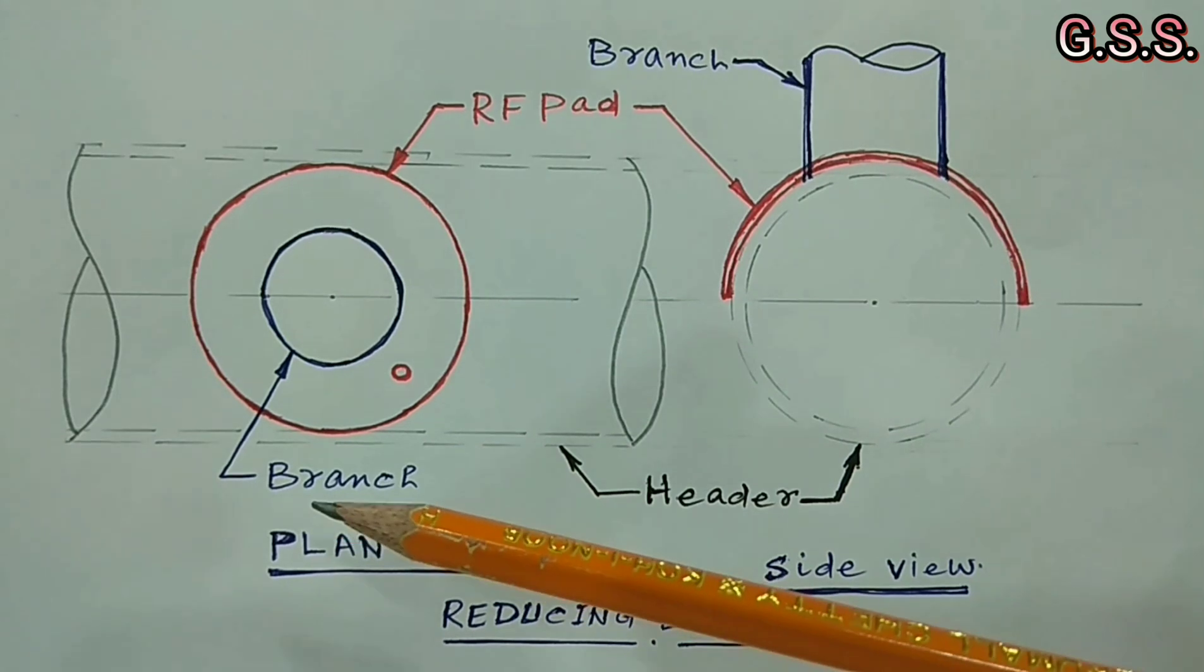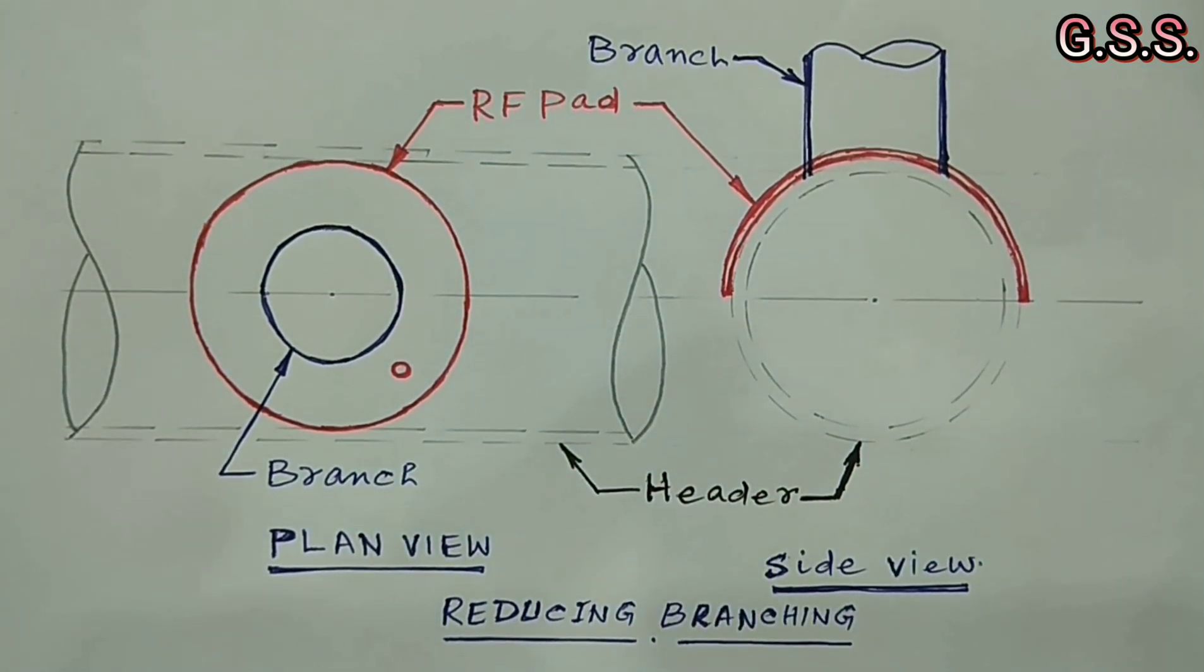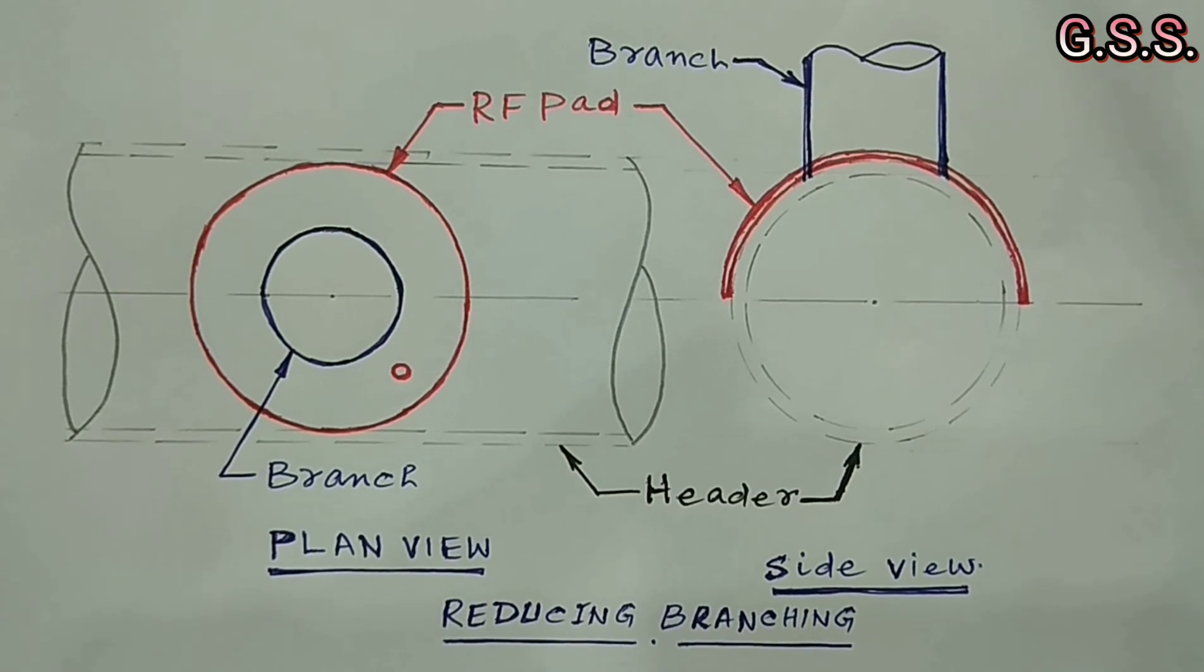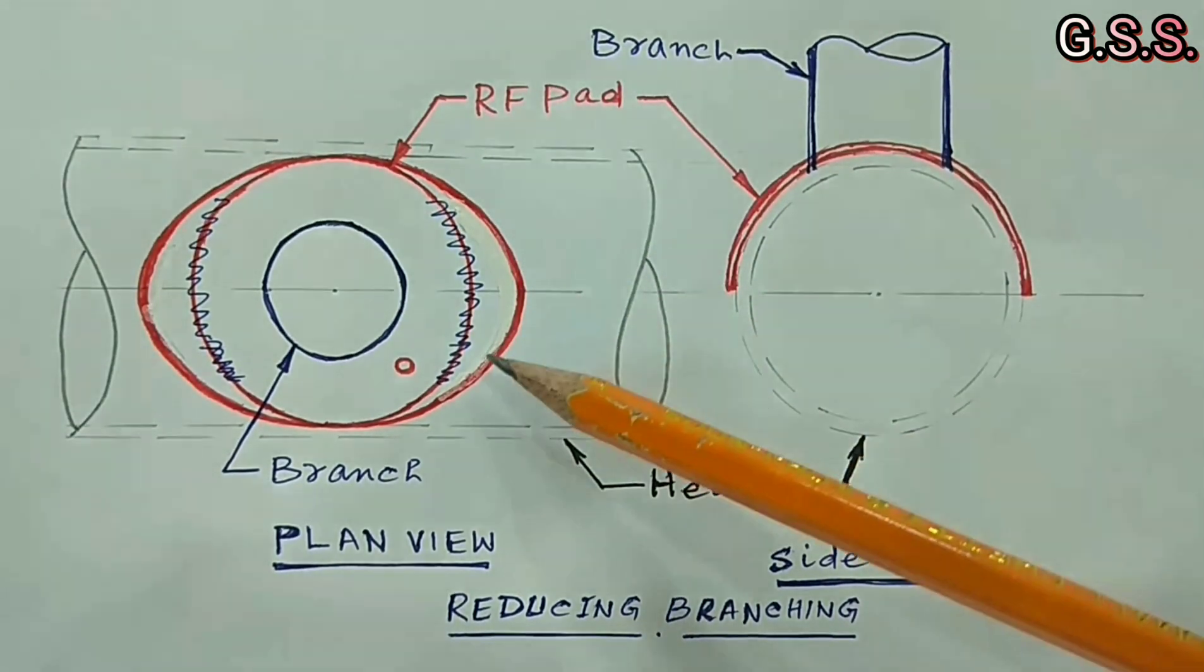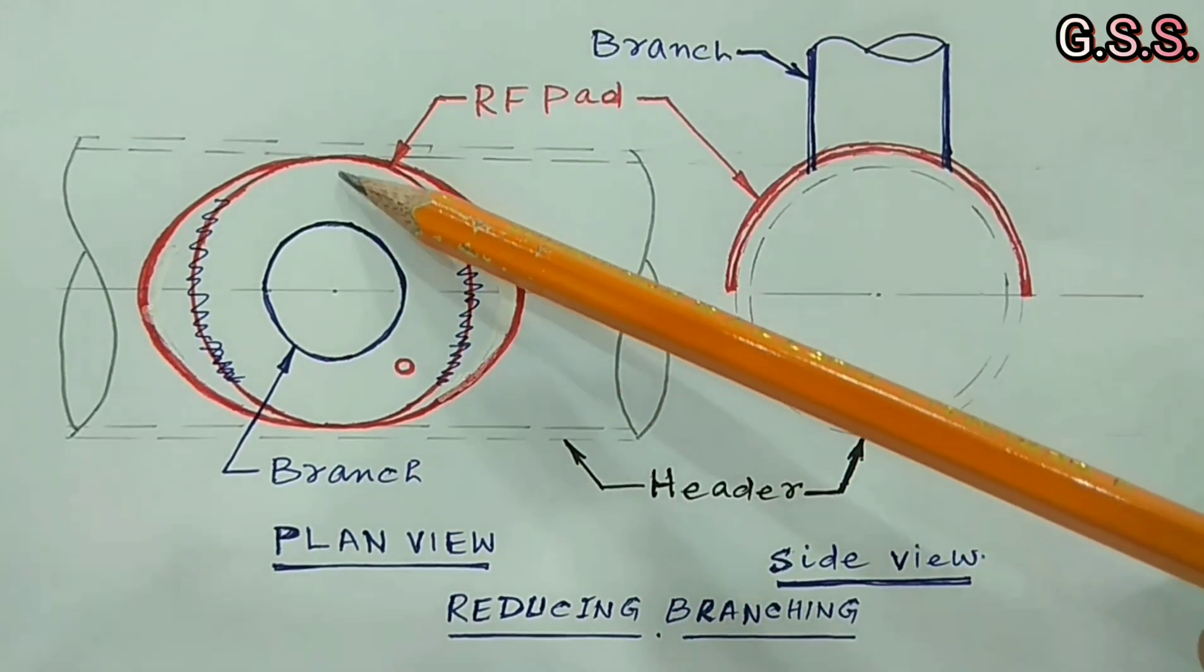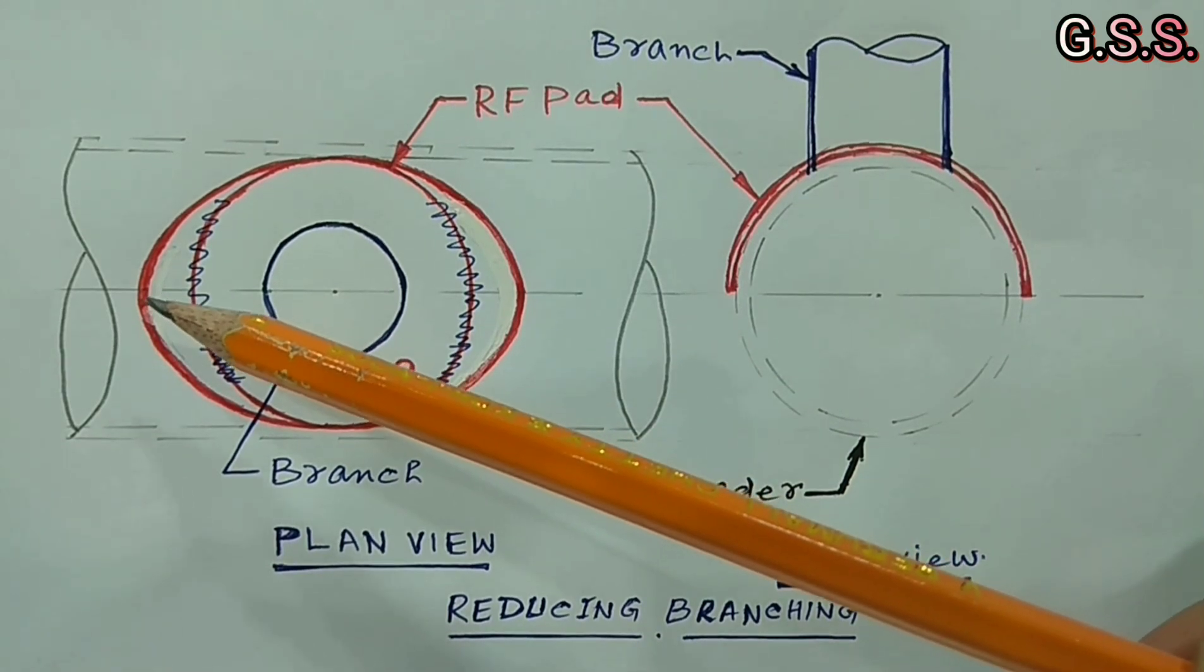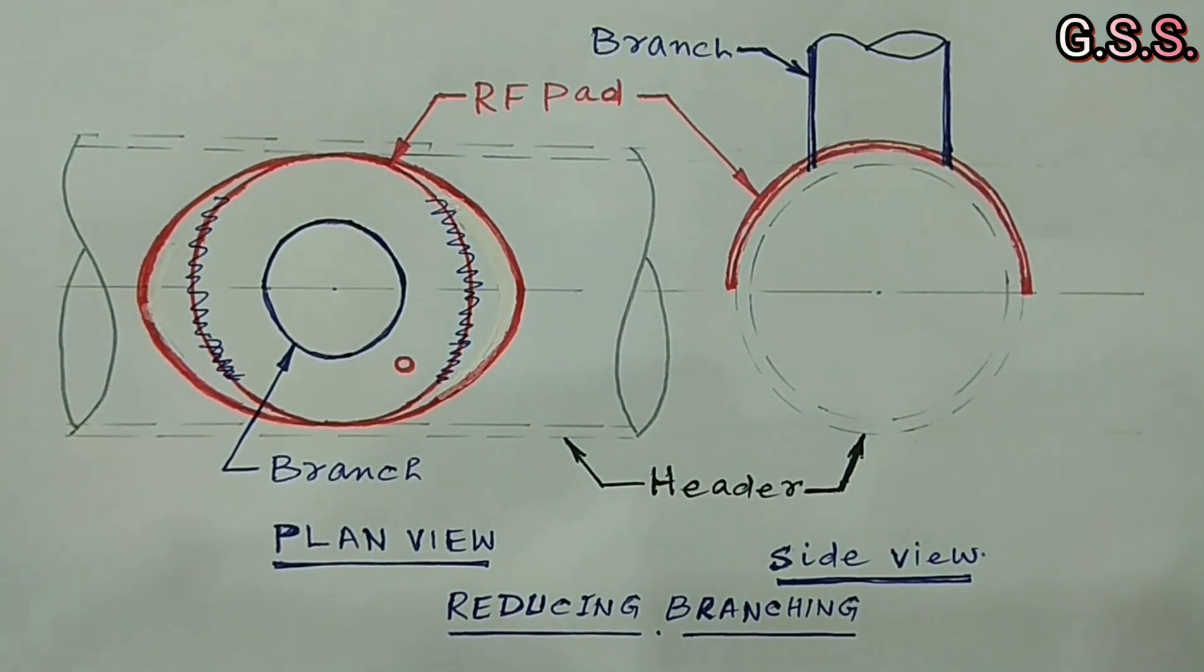Where RF pad diameter should be about 600 mm whereas header diameter is 400 mm. In that case, we should provide elliptical RF pad having one side equal to header diameter and another side diameter equals to header diameter plus shortfall in diameter of other side.